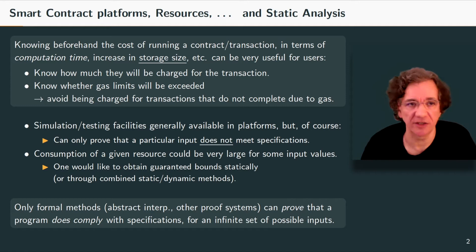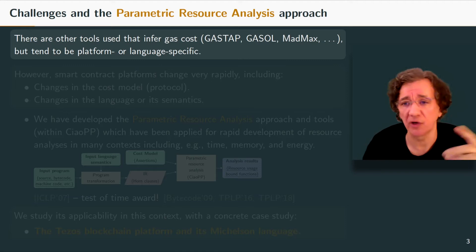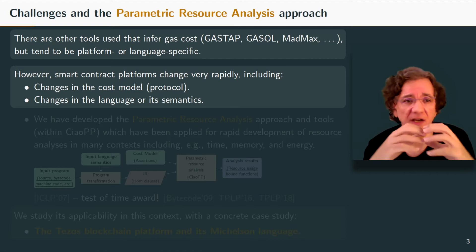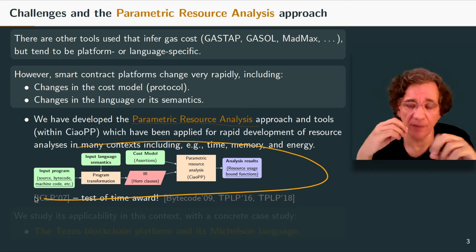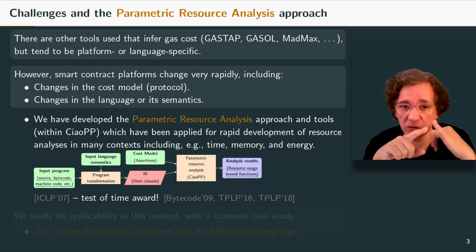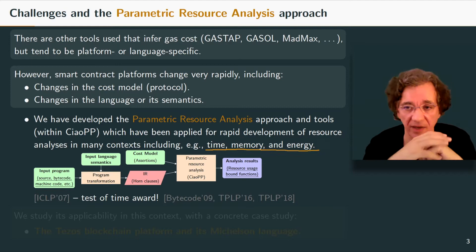What are the challenges in this context? There are other tools that infer gas costs, for example GasTap, Gasol, and Mad Max, but they tend to be platform or language specific. On the other hand, smart contract platforms change very rapidly — there are changes in the cost model, changes in the language and in the semantics. We have developed an approach called parametric resource analysis and a set of tools implementing this within CiaoPP, used for resource analysis in many contexts including time, memory, energy, and different kinds of input languages.